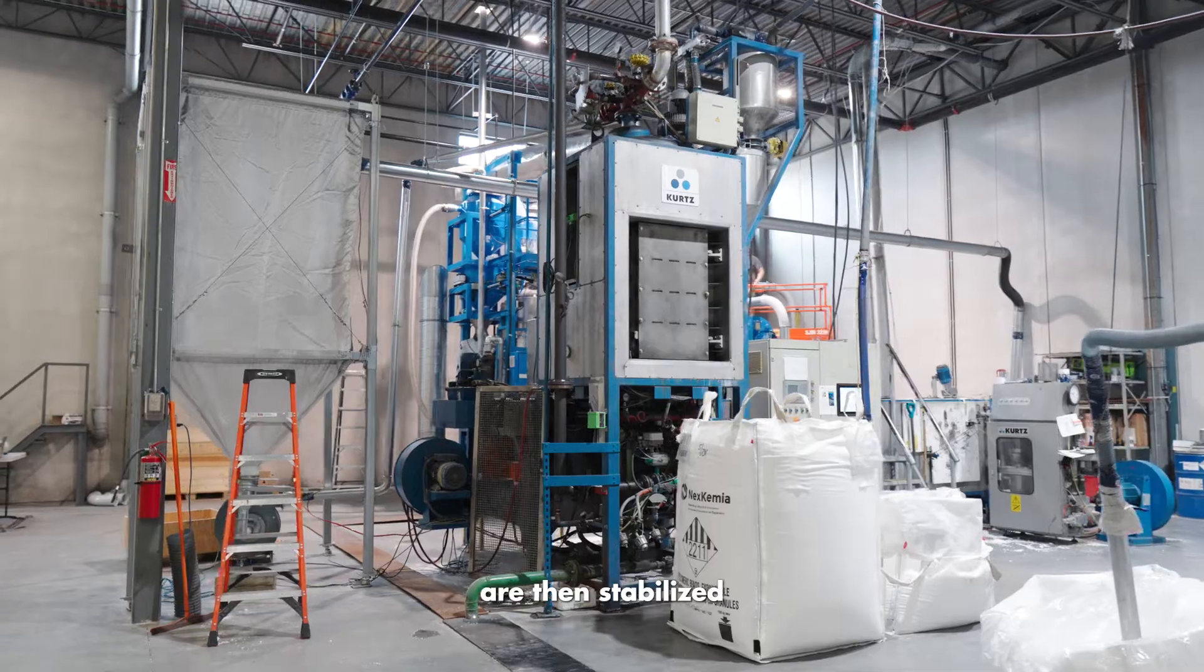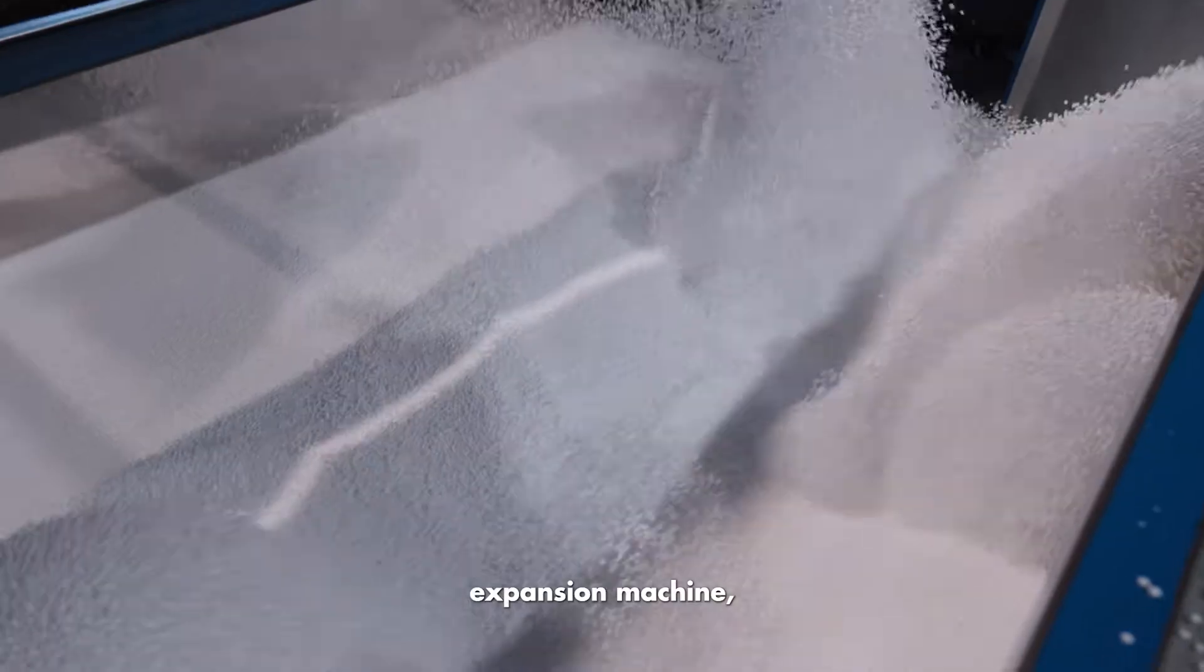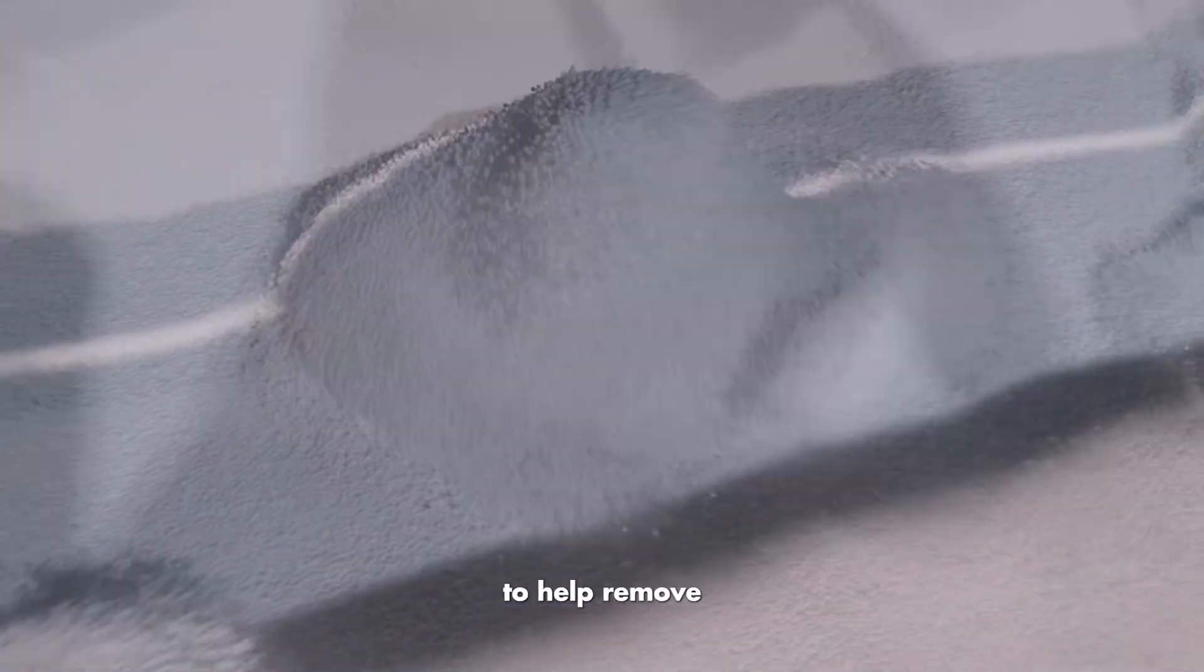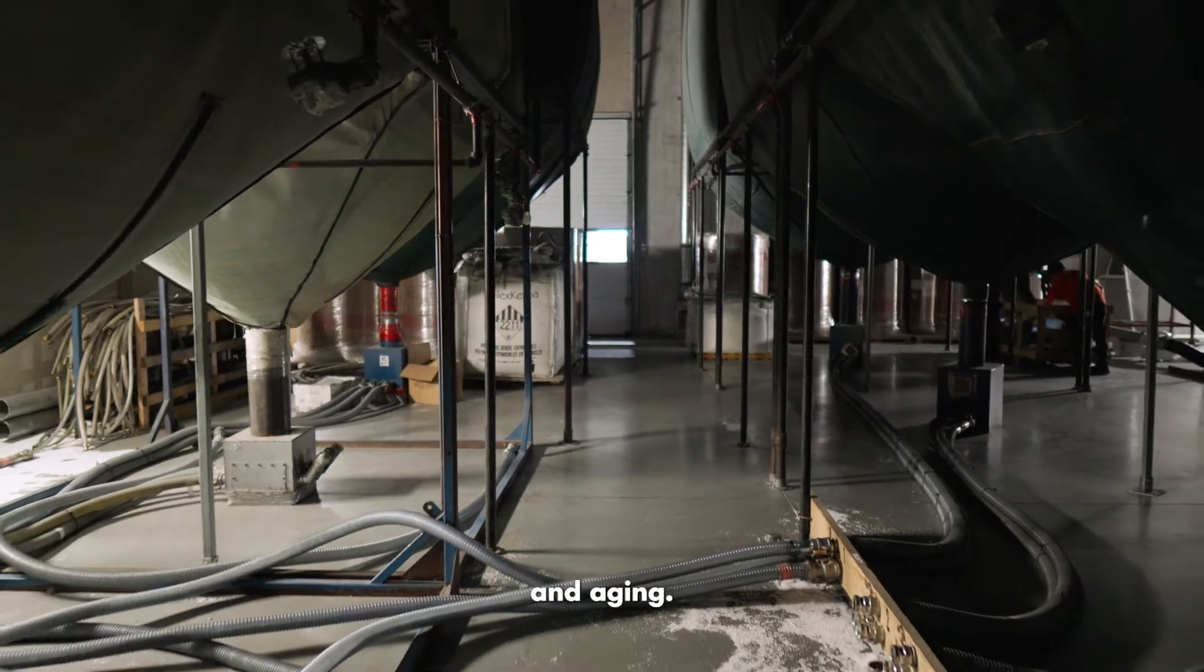The pre-expanded beads are then stabilized by drying and aging. Part of the drying process starts in the bed dryers on the pre-expansion machine, which mixes warm air to help remove any moisture from the EPS. The EPS is sent into the silo room for additional drying and aging.